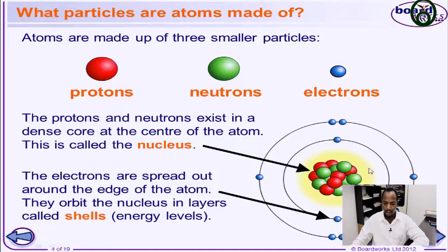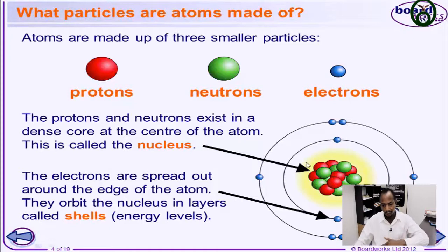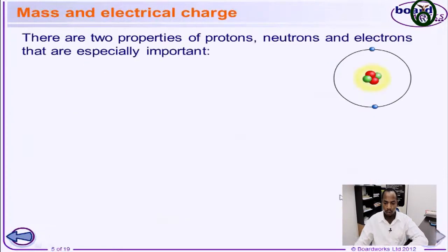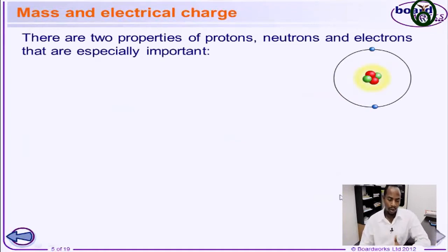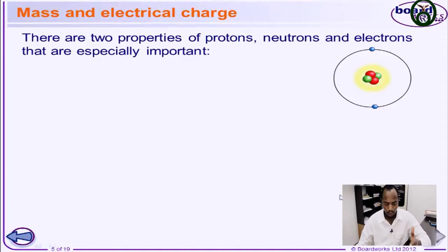The electrons orbit the nucleus just like the planetary system. So the electrons revolve around the nucleus of the atom. Now, have you understood that — the atom and the subatomic particles such as the protons, the neutrons, and the electrons?